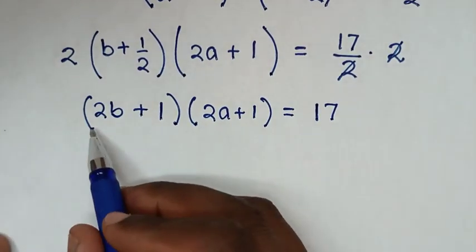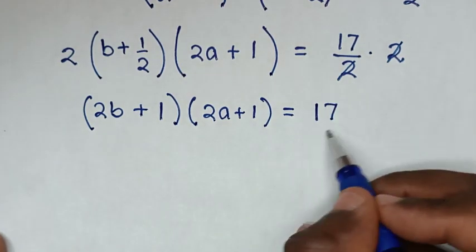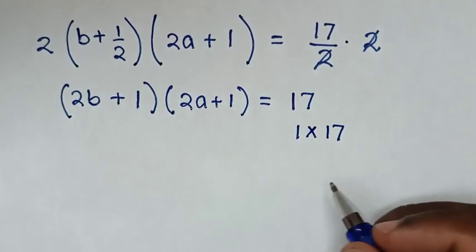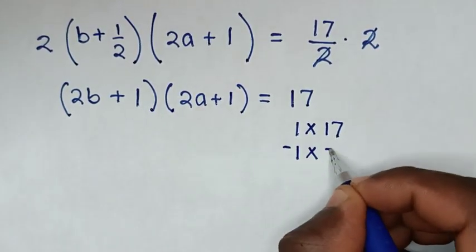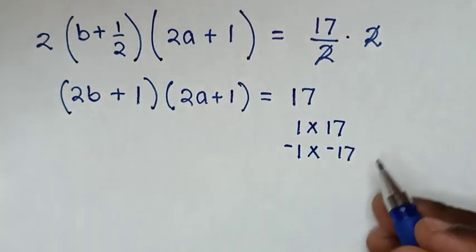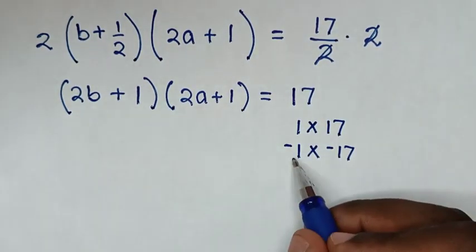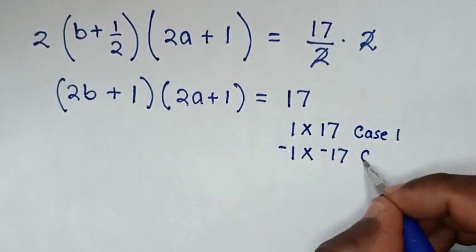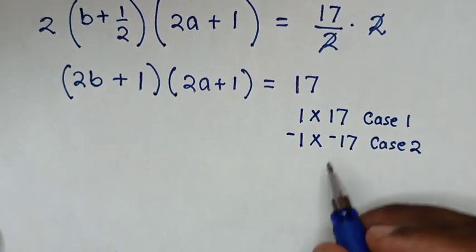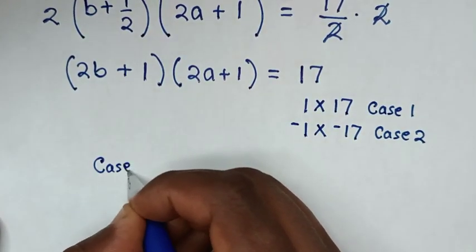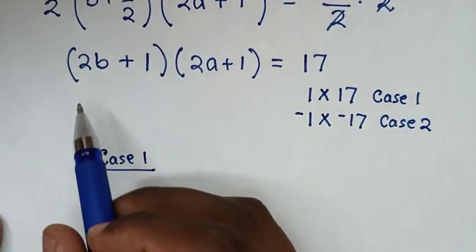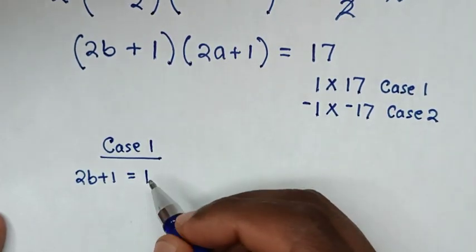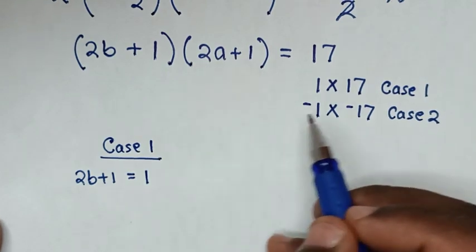Then from here, this times this equals 17. We know that 17 can be a product of either 1 × 17, or −1 × −17, or vice versa: 17 × 1, or −17 × −1. So we have Case 1 and Case 2. In Case 1, 2b + 1 = 1 and 2a + 1 = 17.